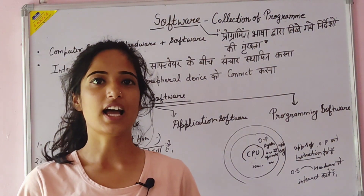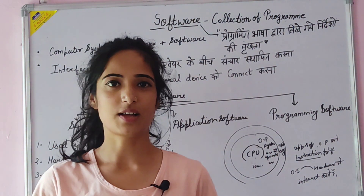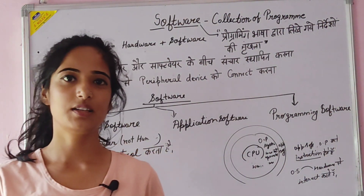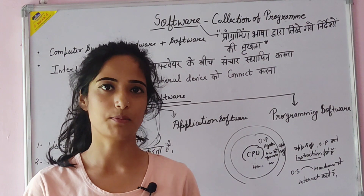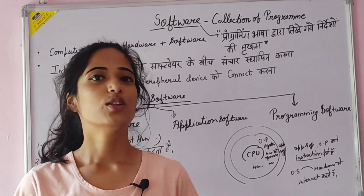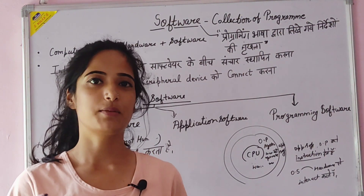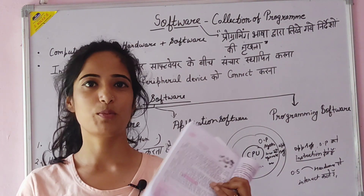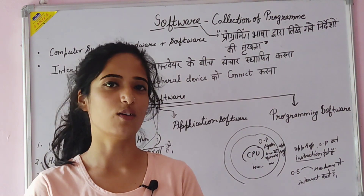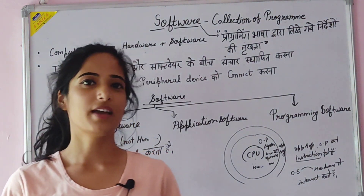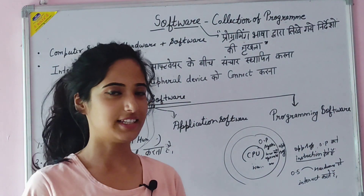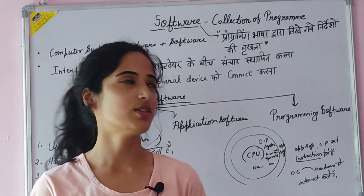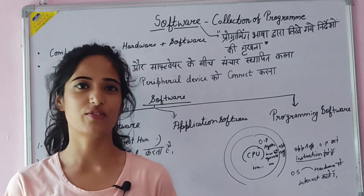For example, like in a previous video, which is the example of utility software — it is written in this chapter, in this book. So I will try to explain it completely. Let's start with software.